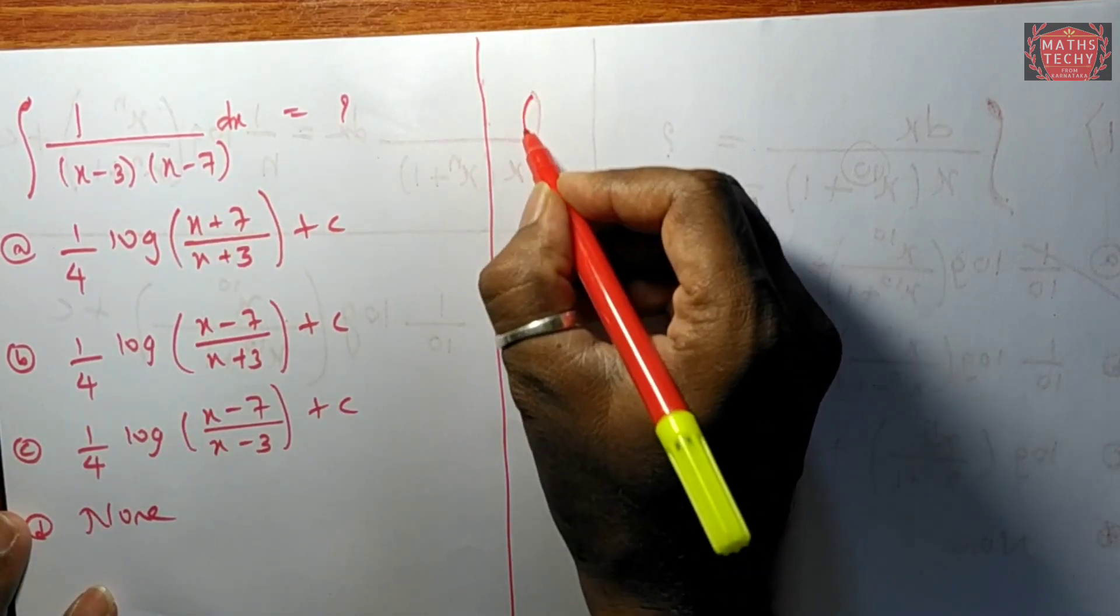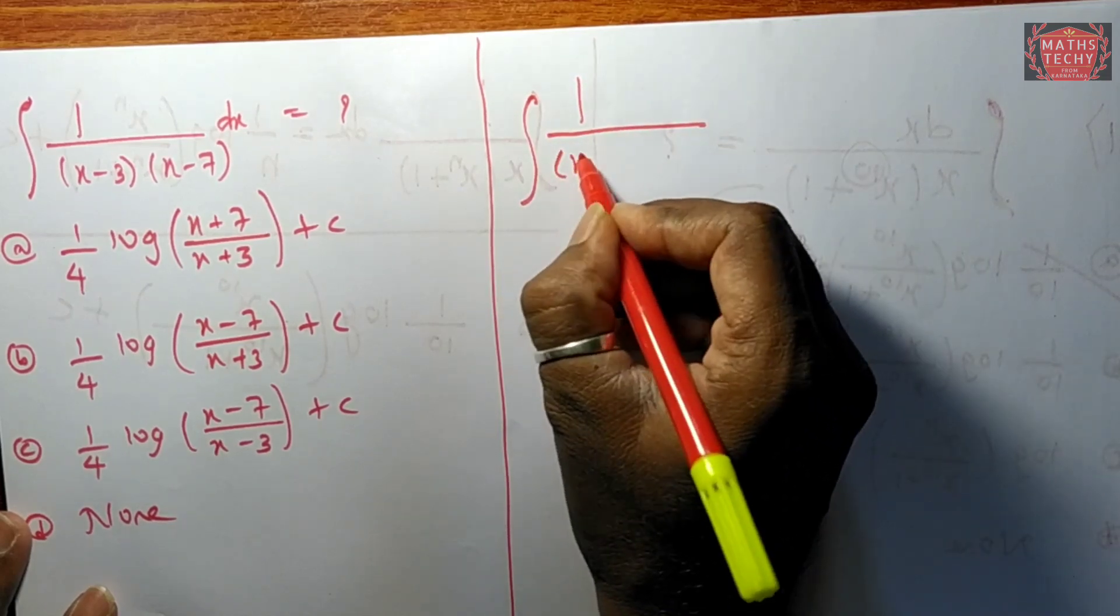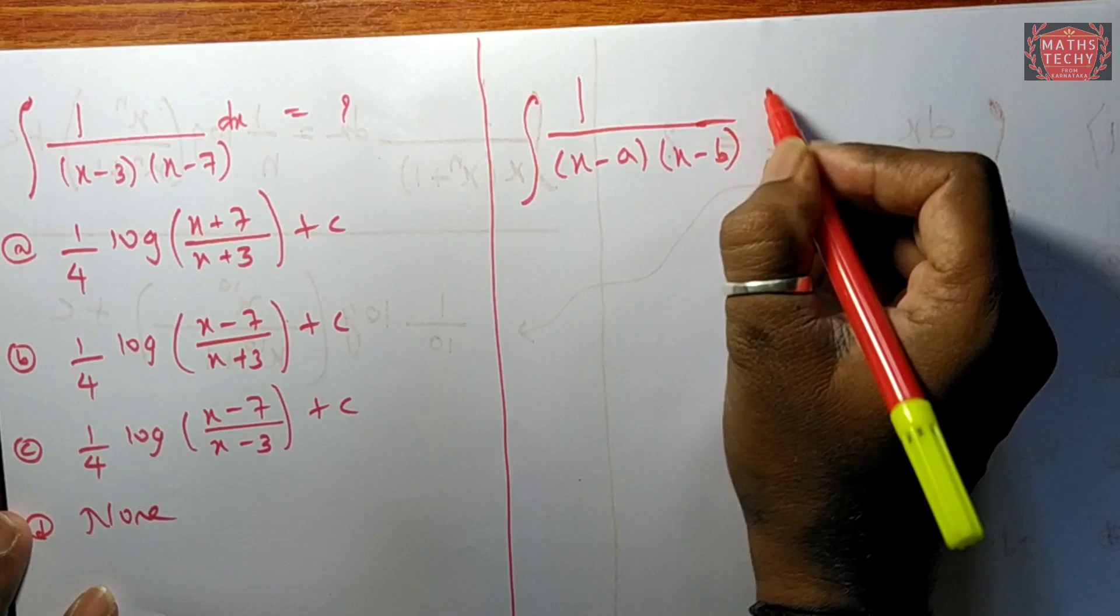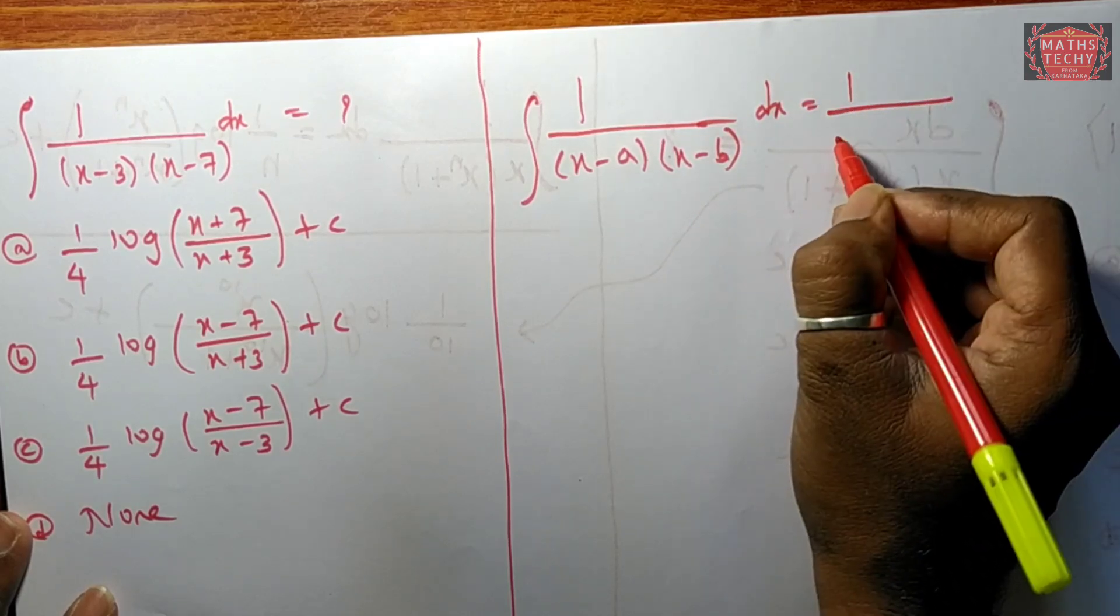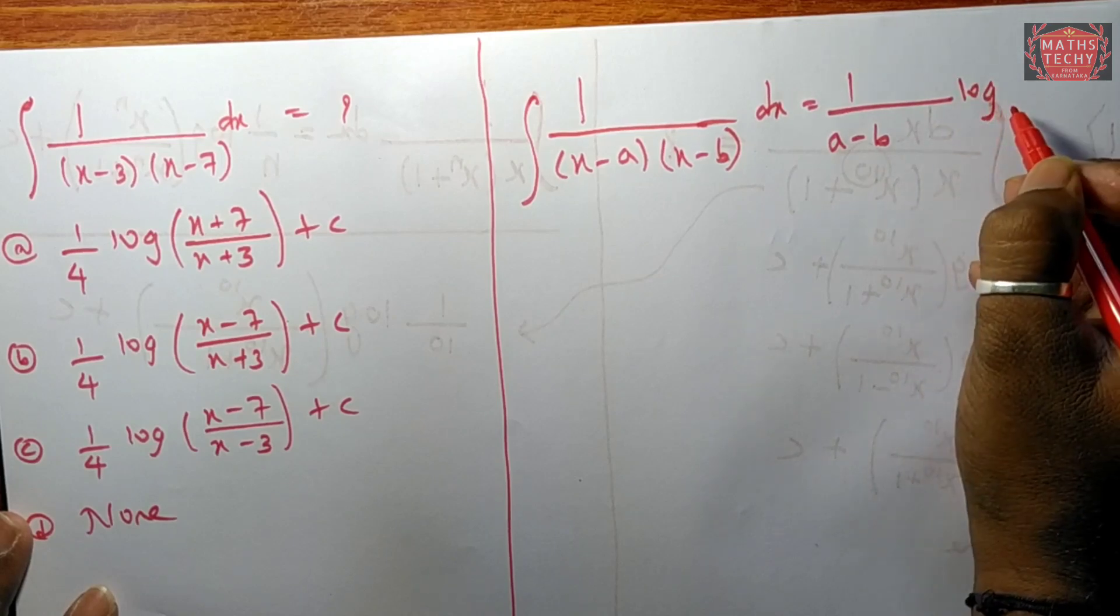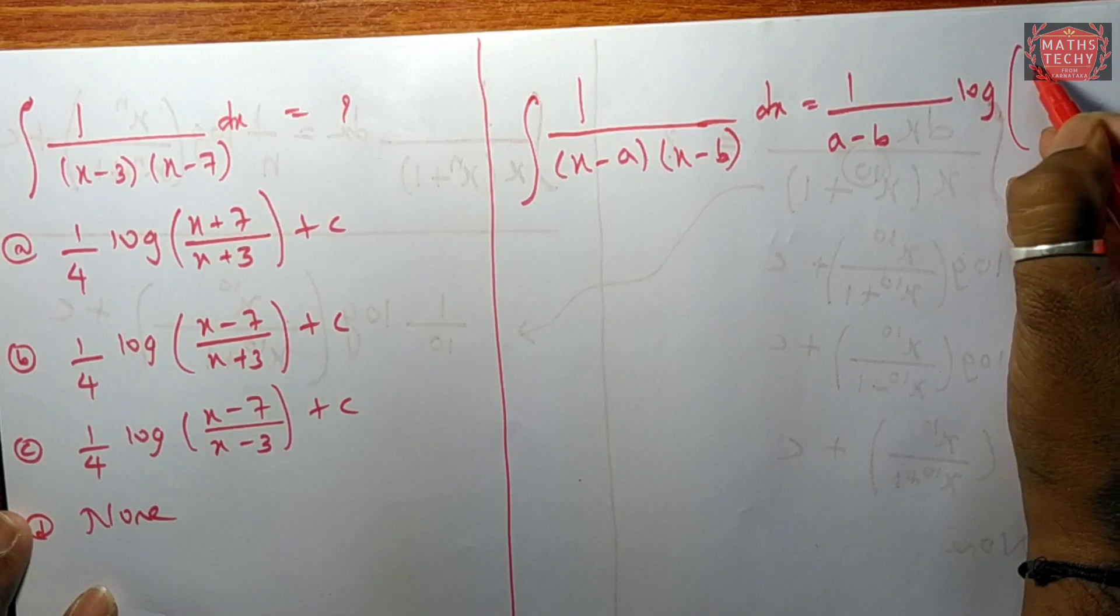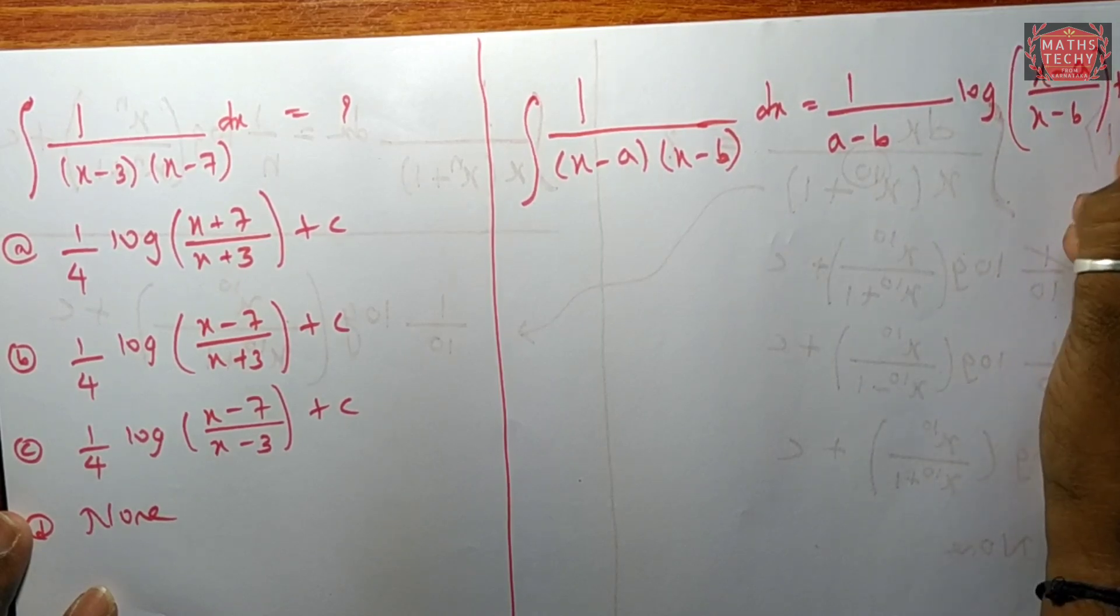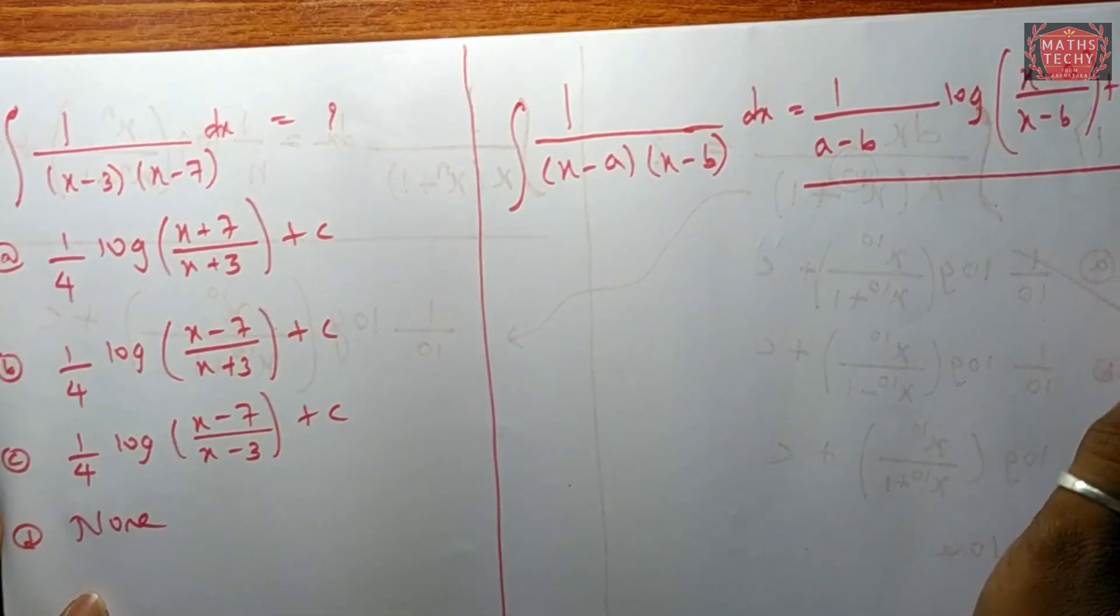So this is simple. I will show you the shortcut form. This is form 1: 1/(x minus a)(x minus b) dx. This is how we solve this. Direct answer is 1 divided by a minus b log of x minus a divided by x minus b plus c.